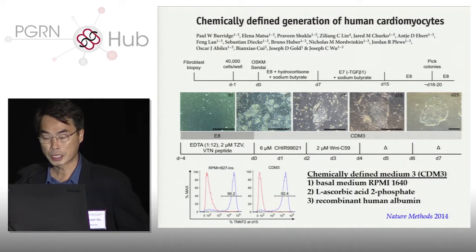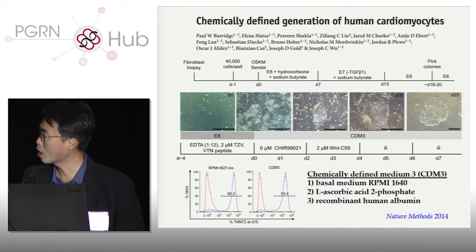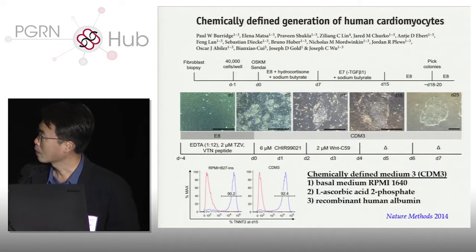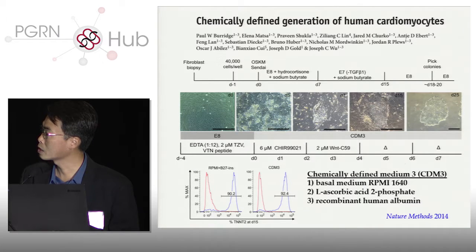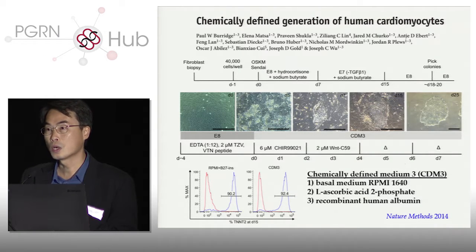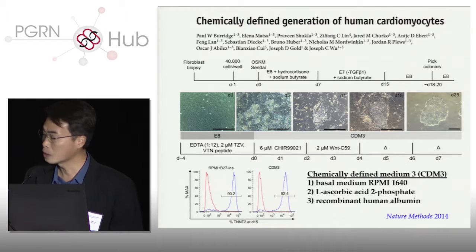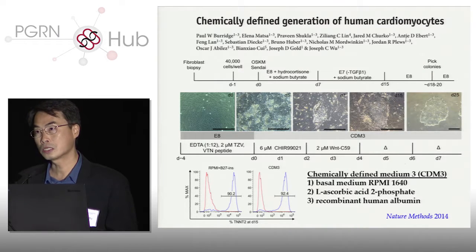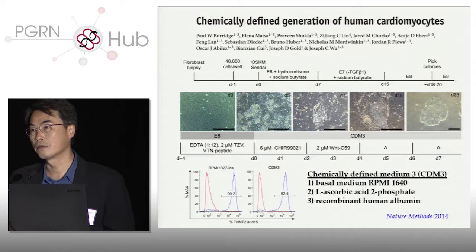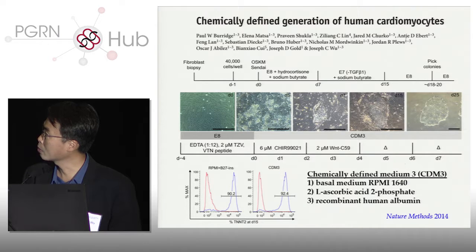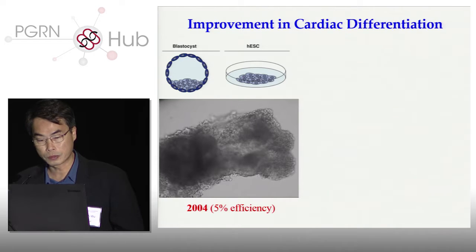We came up with this CDM3 cocktail. This media has basal media RPMI, L-ascorbic acid, and human recombinant albumin. This media allows you to make iPSCs at a much lower cost — compared to the commercially available media costing about $300 per bottle, we can now make this media at about $50 to $60 a bottle. Once you're thinking about mass-scale production of iPSC cardiomyocytes, this is quite essential. The other advantage is that we don't use fetal bovine serum, so there's no animal product involved, which is important for clinical trials.